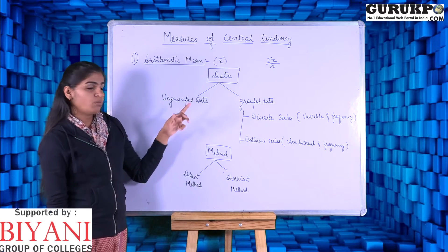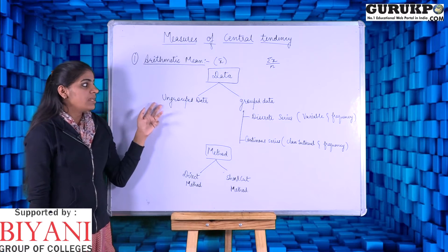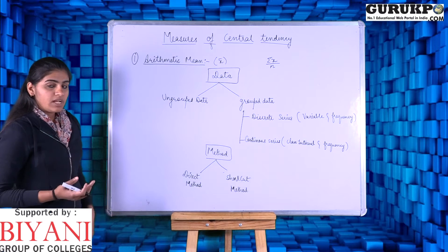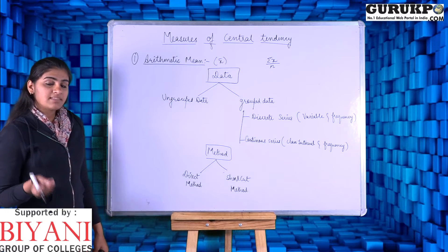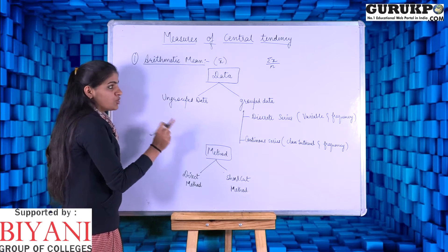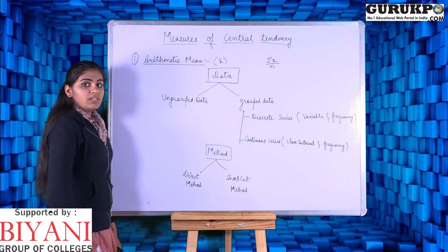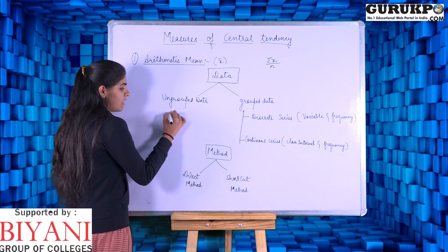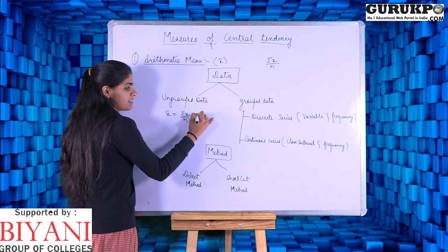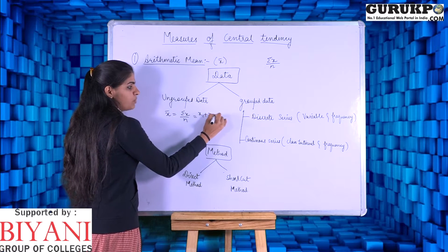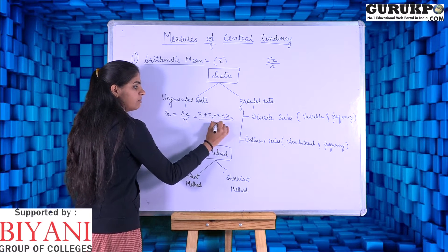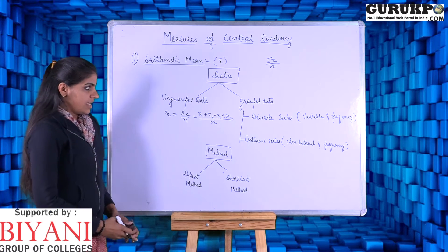The formula for arithmetic mean depends on the data. If ungrouped data is given, you should apply the formula: x-bar equals sigma x upon n. Here, sigma x equals x1 plus x2 plus x3 plus ... xn, divided by the number of observations.